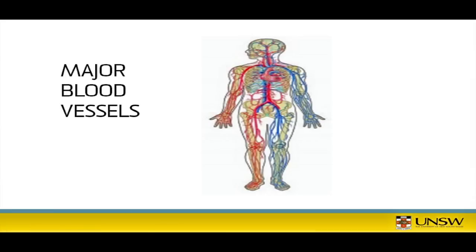What do you know about the function of blood? It's used to carry oxygen around the body. So when we look at the blood vessels in this diagram, why are some of the vessels red and others blue? Because some of the blood's oxygenated and some isn't.